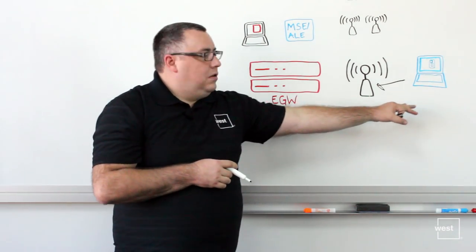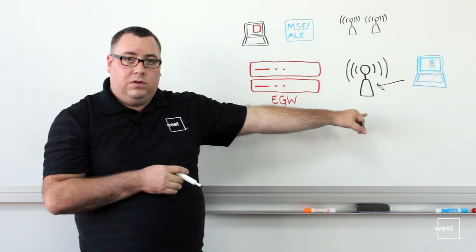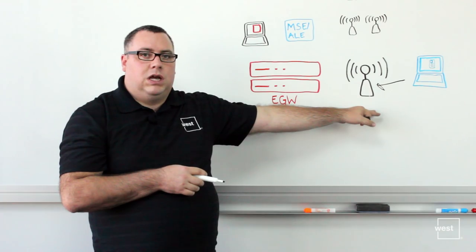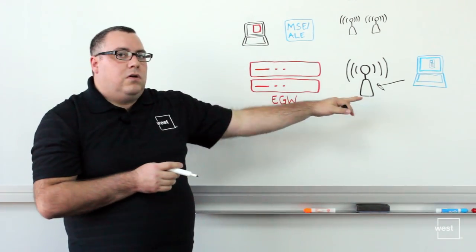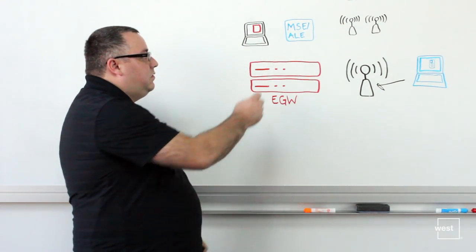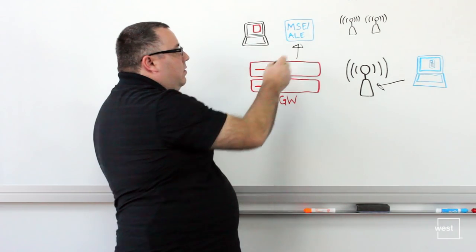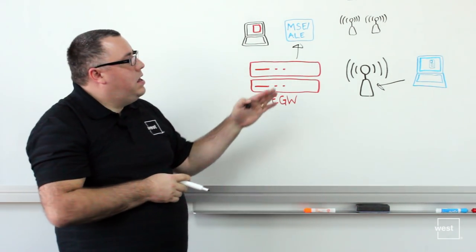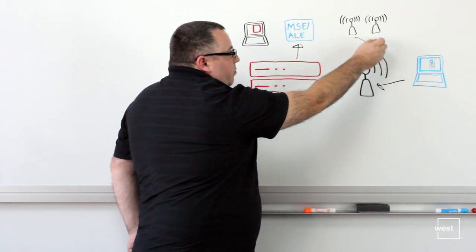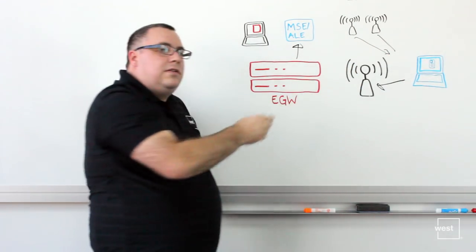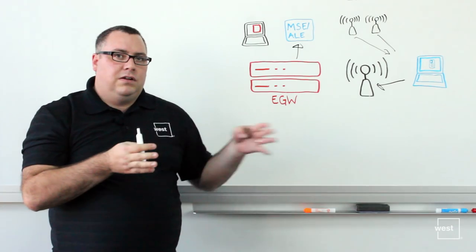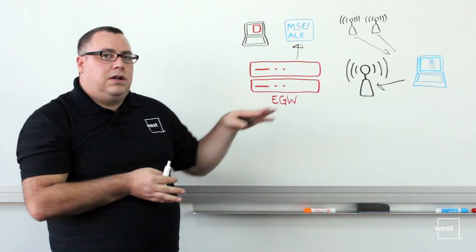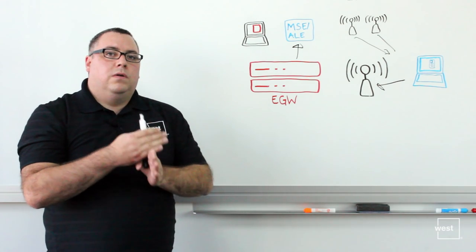When a 911 call is placed, the location that's sent to the public safety answering point is the location tied to the access point that the user is connected to. When the 911 call gets routed through, the emergency gateway will query out to the MSE or the Aruba ALE or Airwave. Each access point will report 'I've seen this client and its signal strength is about this much.' Using those calculations, they can provide a triangulated position of where the user is located.